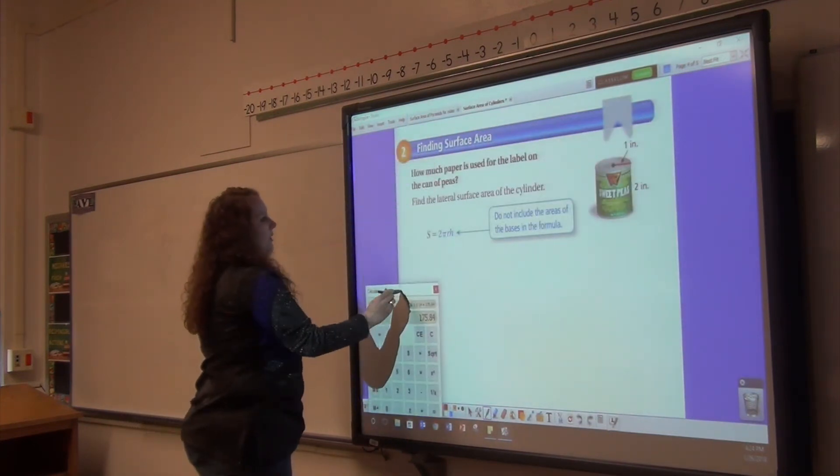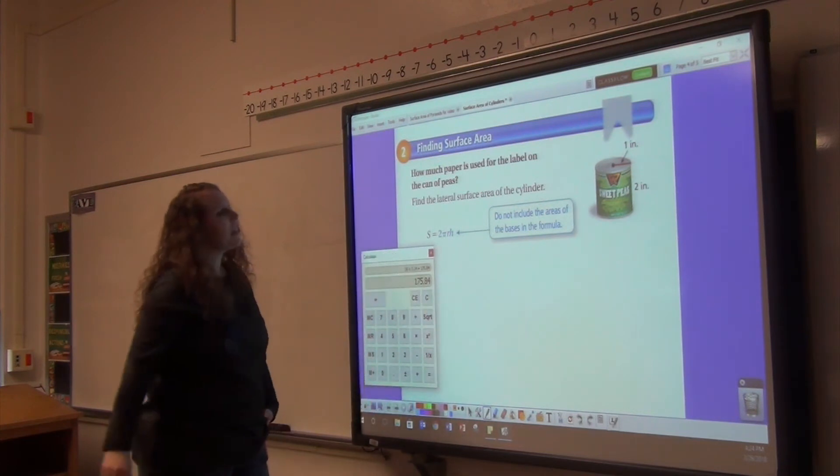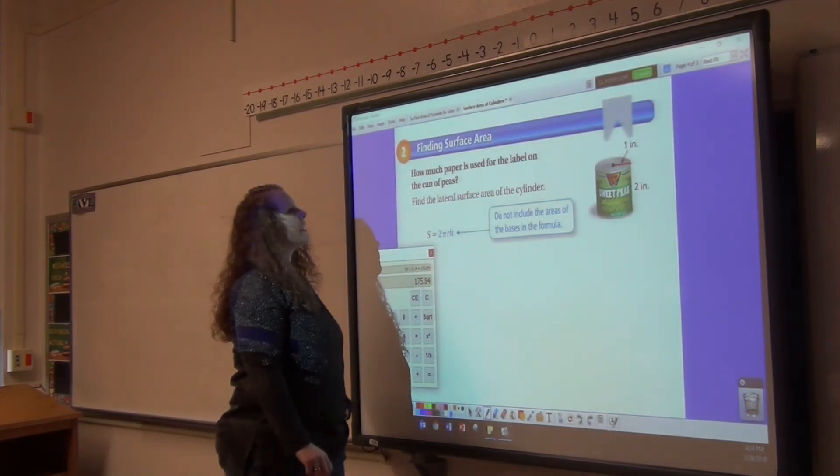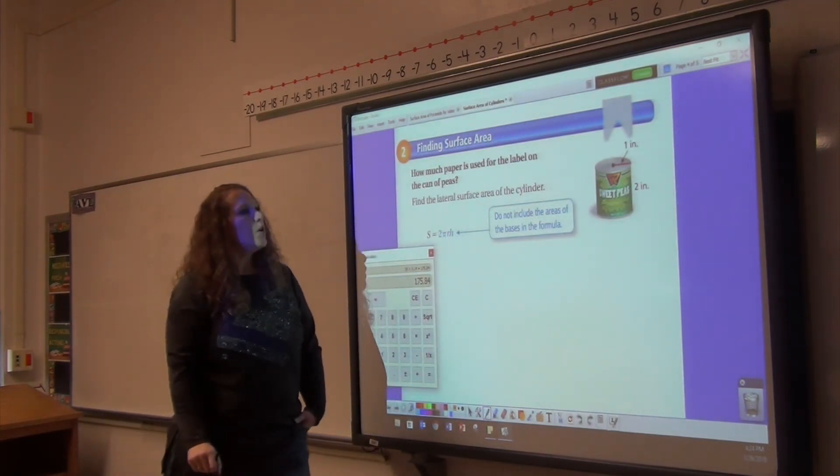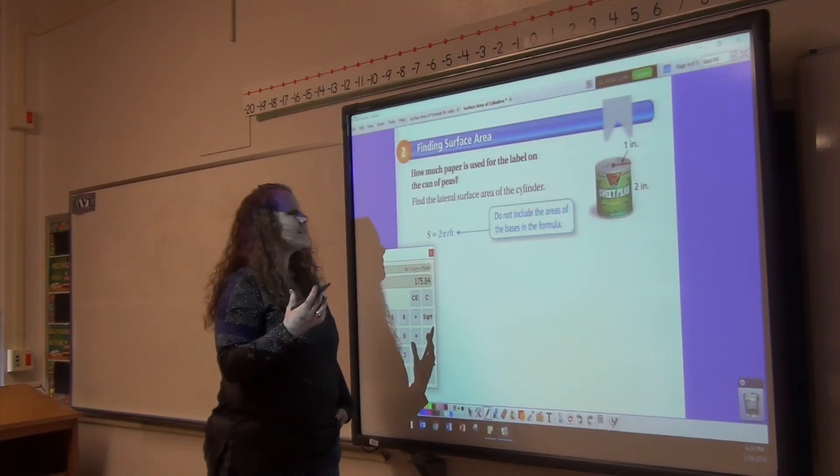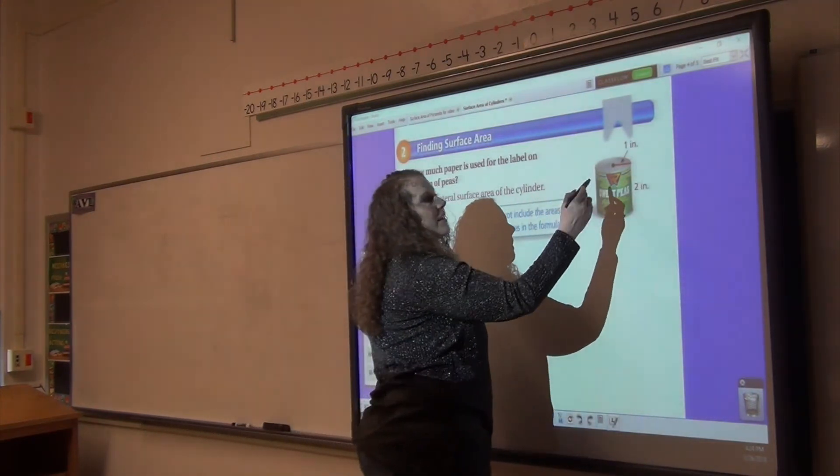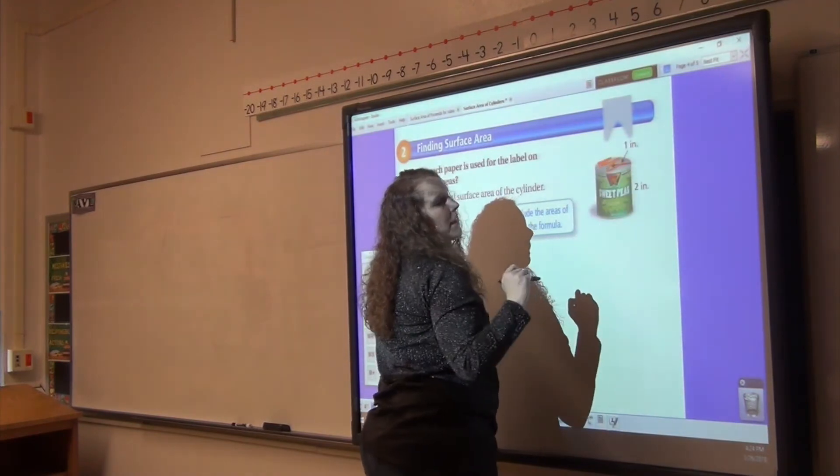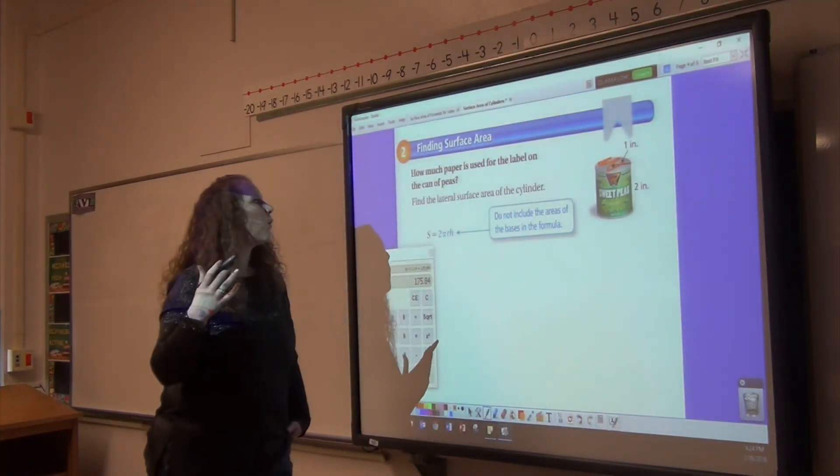All right. Let's look at this one. How much paper is used for the label on the can of peas? So we don't need to know the entire surface area. We just need to know where the label is. So we're not going to do either base because the label doesn't go on the base.